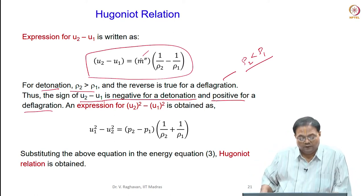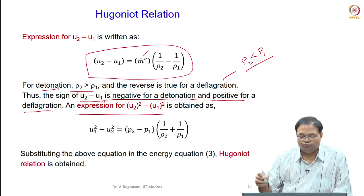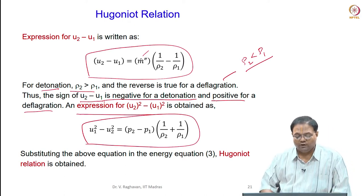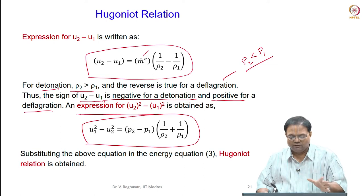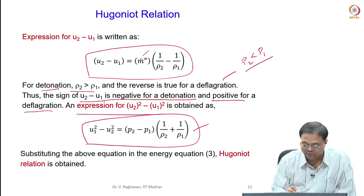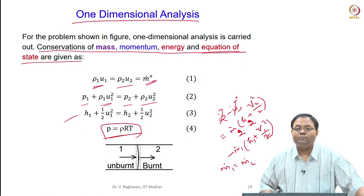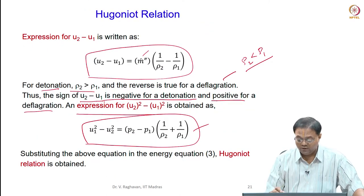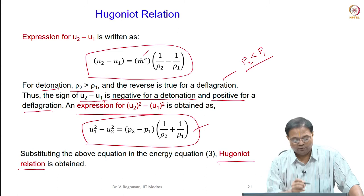The expression for u₂² minus u₁² is also derived using the momentum and continuity equations together, and is another important equation. Using this along with the energy equation — h₁ plus half u₁² equals h₂ plus half u₂² — and substituting u₁² minus u₂², we obtain what is called the Hugoniot equation.